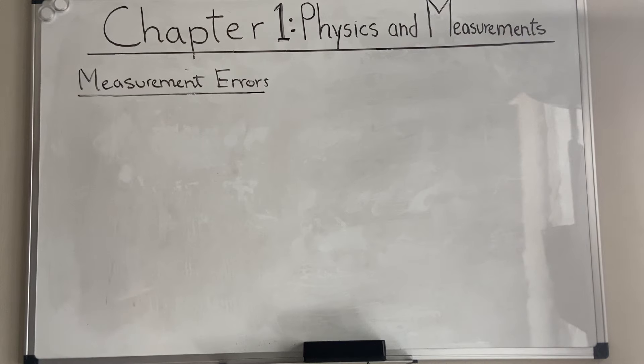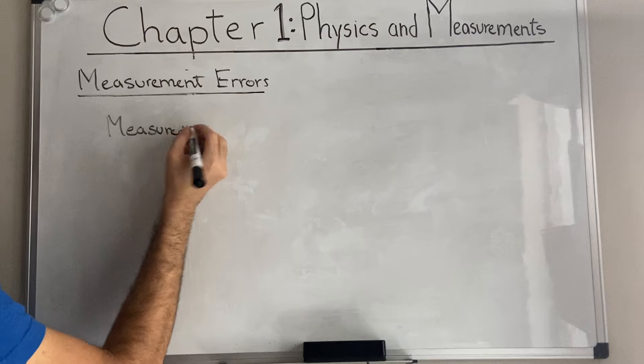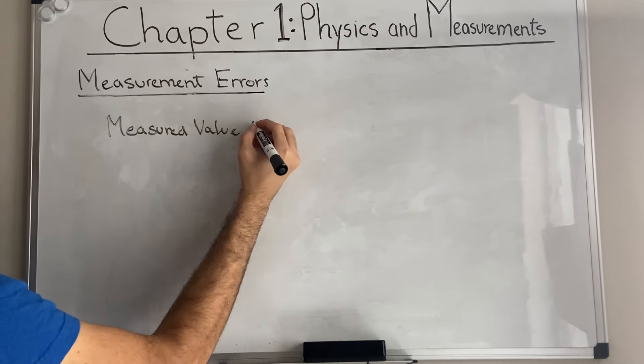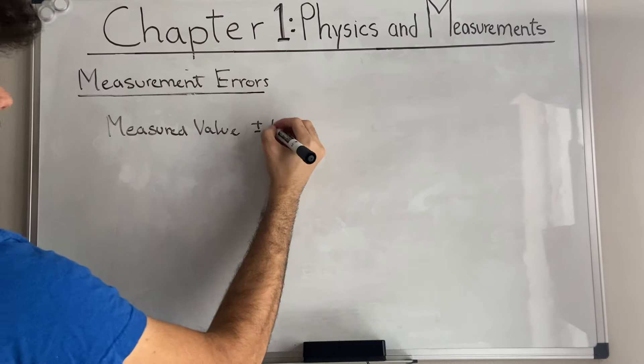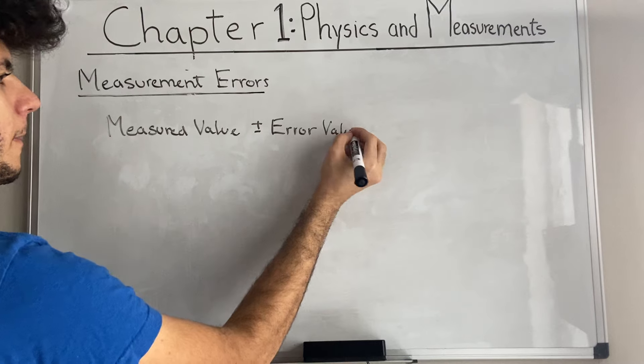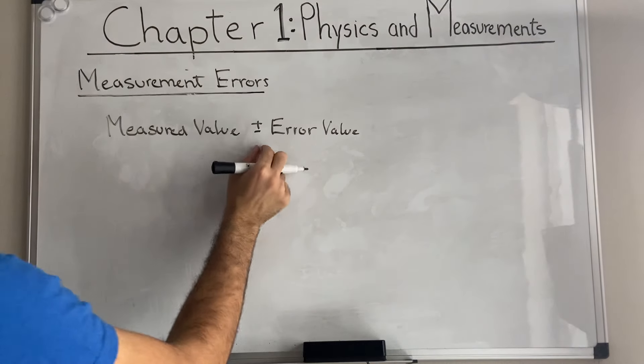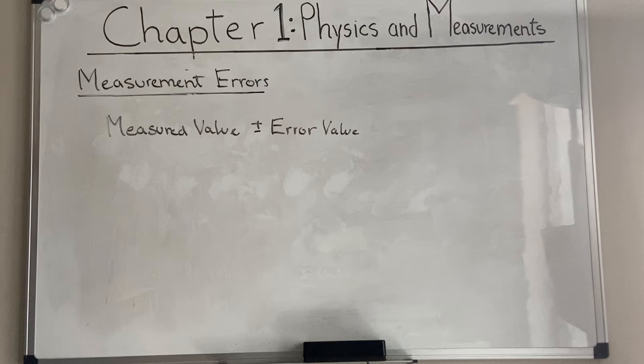Ideally, every measurement should be reported as a measured value plus or minus an error value. By adding this, we're basically considering, we're accepting the fact that our measurement will not necessarily be perfect. And that there will actually, it will never be perfect. There's always going to be a certain amount of error and uncertainty in our measurement.